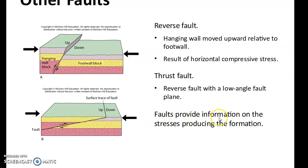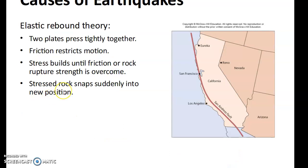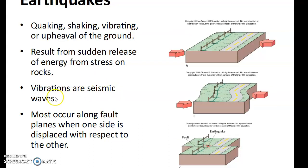The fault provides information on the stresses produced by the formation. Earthquakes are a quaking, shaking, or vibrating upheaval of the ground resulting from the sudden release of energy from stress on rocks. The vibrations are seismic waves — we talked about the three different types earlier. Most earthquakes occur along fault planes with one side displaced with respect to the other. For example, what might have been a straight line fence is now offset.